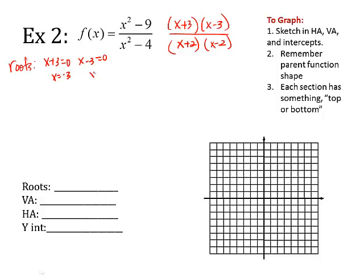So x is negative three, x is three, so I have two roots, negative three, zero, and three, zero.